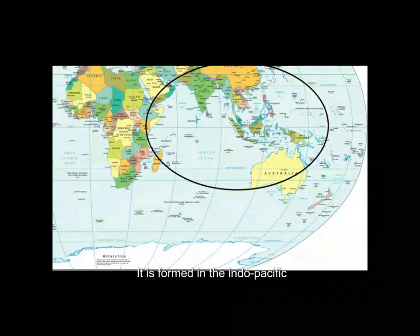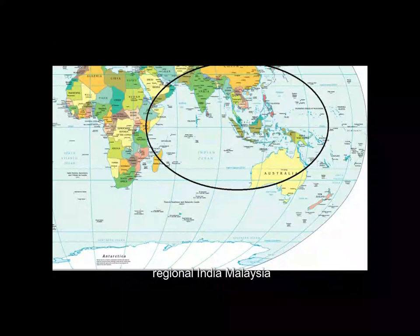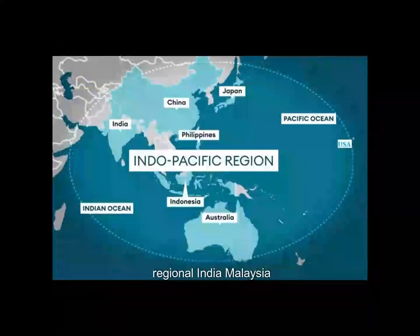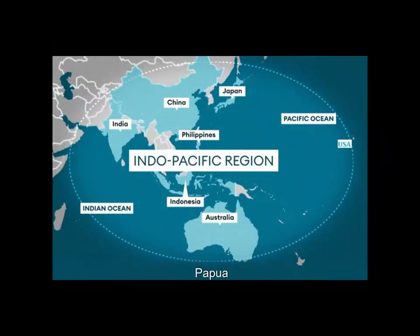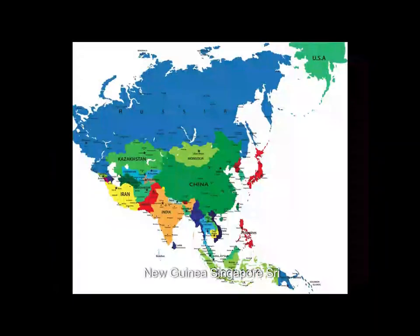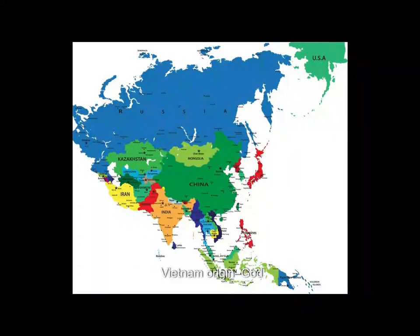It is formed in the Indo-Pacific region. The countries in the Indo-Pacific region are India, Malaysia, Myanmar, Maldives, Nepal, New Zealand, Papua New Guinea, Singapore, Sri Lanka, Taiwan, Thailand, Japan, United States of America, and Vietnam.